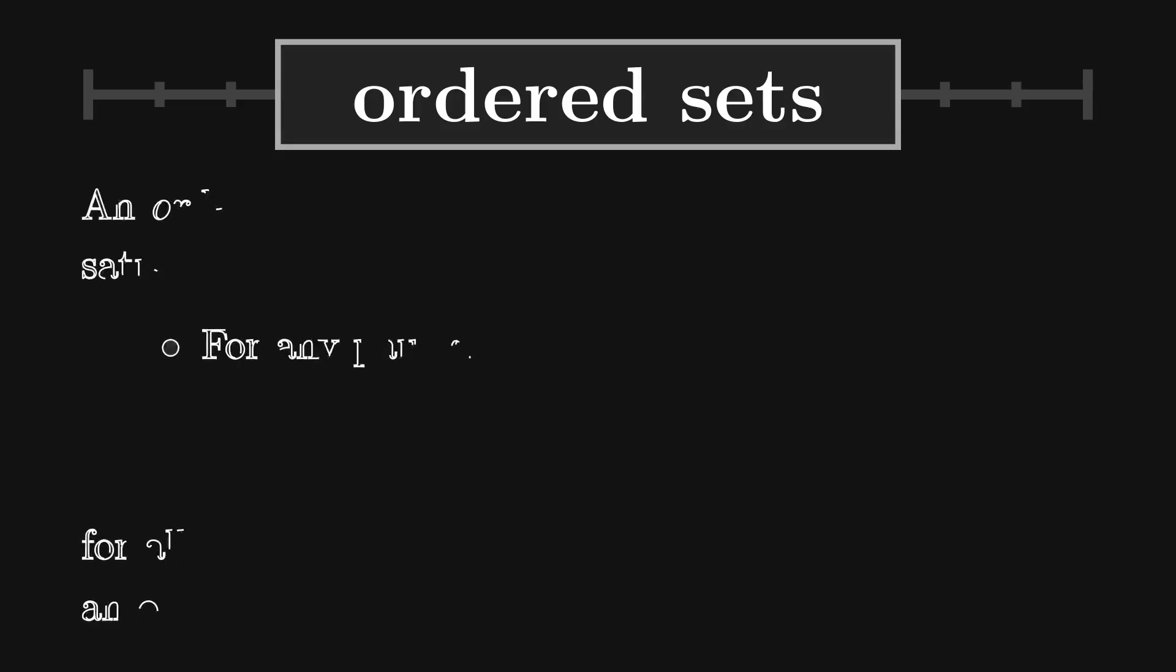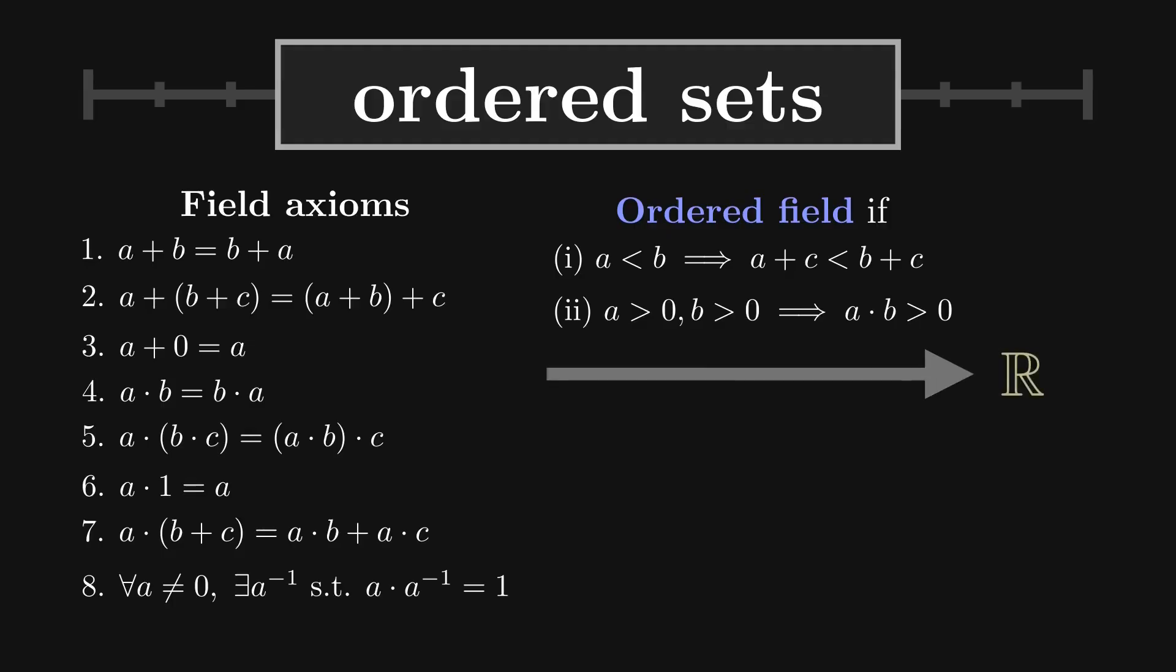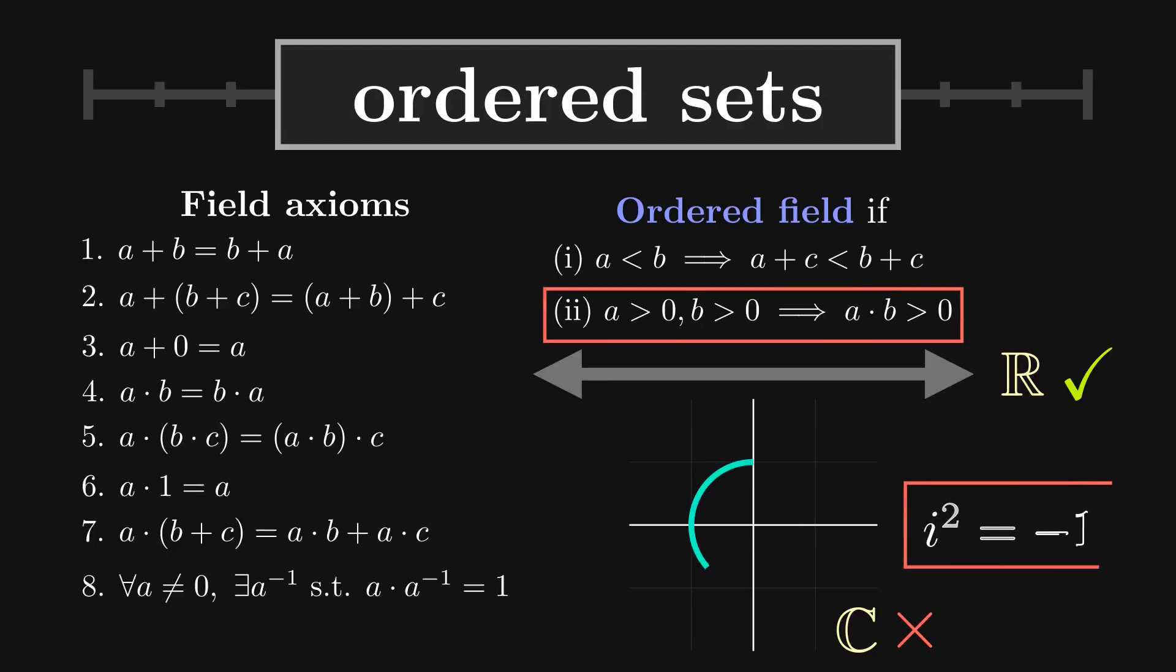Another set of axioms that our construction should satisfy is that of an algebraic field. We further distinguish R as an ordered field, since its field operations are compatible with the ordering. It should be noted that an ordered set may not always be an ordered field. The complex numbers, for example, can be given an order on their elements, but no order is compatible with their field operations.